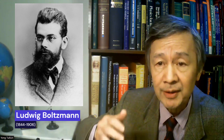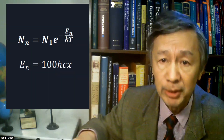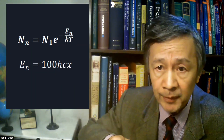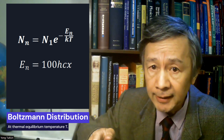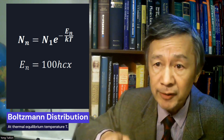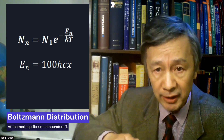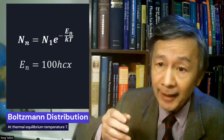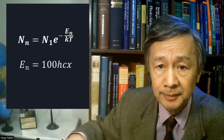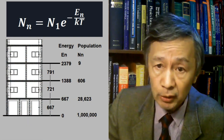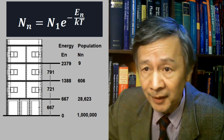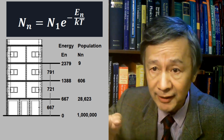As I discussed in my previous talk, the population or the number of possible CO2 molecules in any discrete energy levels is governed by the famous Boltzmann distribution law at thermal equilibrium, where N sub N is the population at energy level N, K the Boltzmann constant, T the atmospheric temperature in Kelvin, H the Planck constant, C the speed of light, and X is the wave number in per centimeter. By assigning the energy of the ground state as zero and the total CO2 molecules as one million, the population distribution can be obtained, as you can see in this diagram.